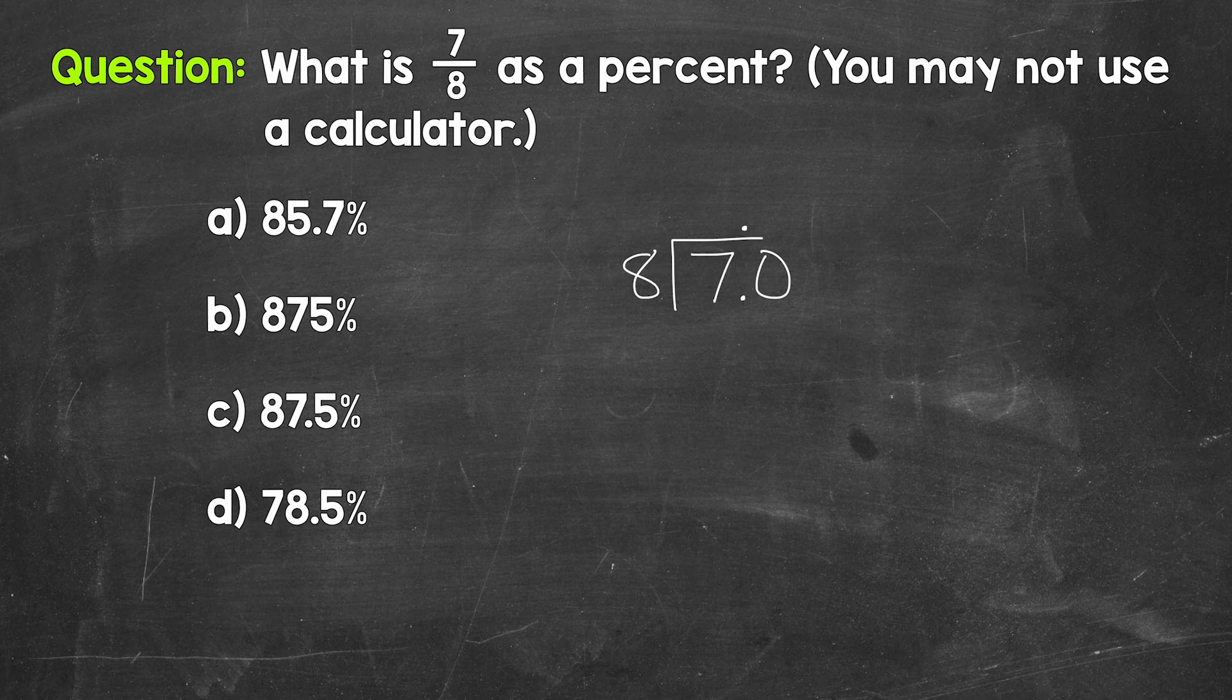And now we can think of this as 70 divided by 8. So how many whole groups of 8 in 70? How many 8s in 70? Well, 8. That gets us to 64. So we put 8 up here above the 0.